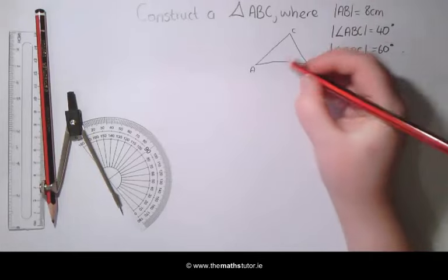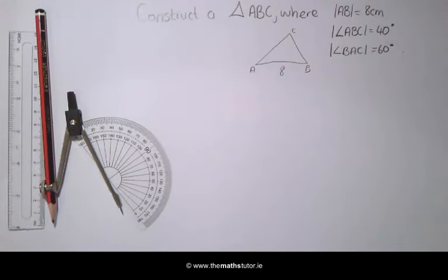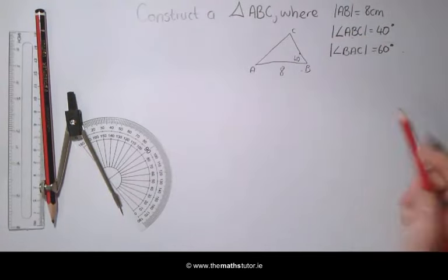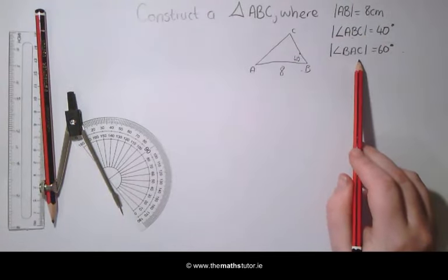AB is equal to 8 cm. The angle at B needs to be 40 degrees and the angle at A needs to be 60 degrees.